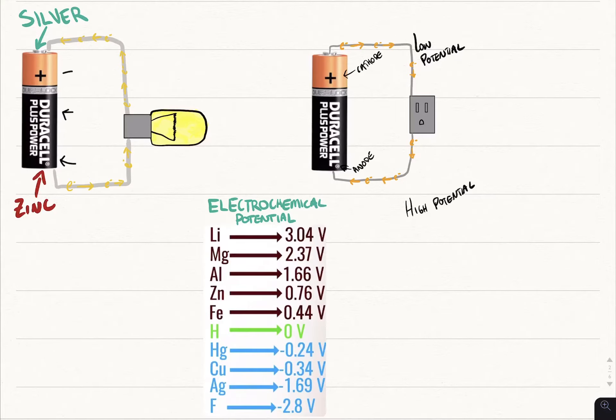Now this anode stores a negative charge, cathode stores a positive charge, and then the electrolyte just keeps the two from mixing. And all a battery really is is the transfer of electrons from high potential to low potential.